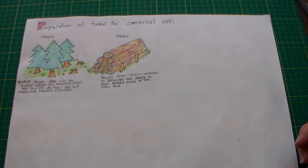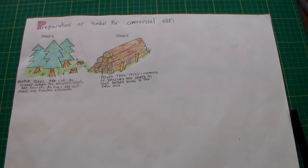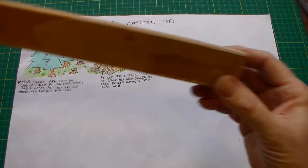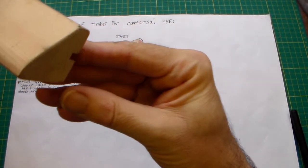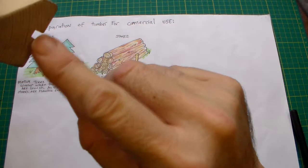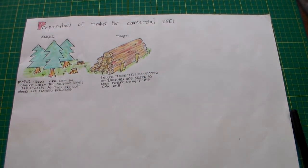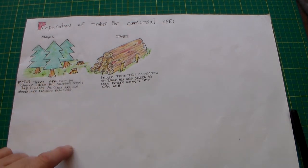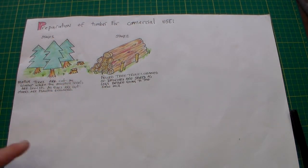What that basically means is how the timber — and we have a piece of timber here — gets from a tree to a piece of timber ready for use. You can see the wood grain in the end there. This process is called preparation or conversion.